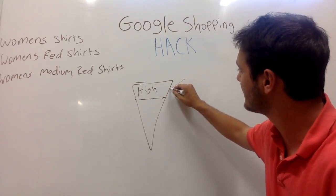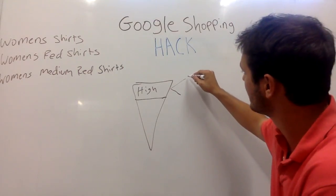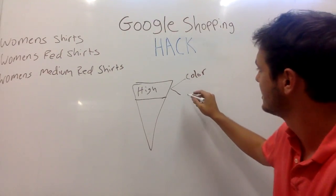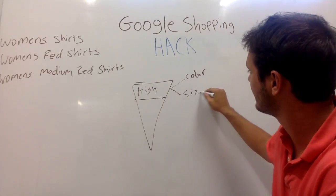In this campaign you'd want to make two negative keyword lists. You want to make a negative keyword list of all the colors of all of your shirts and all of the sizes of all of your shirts.